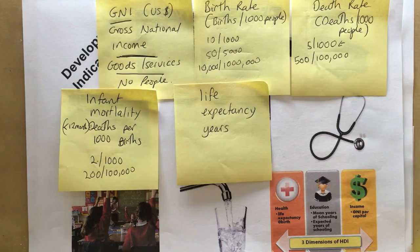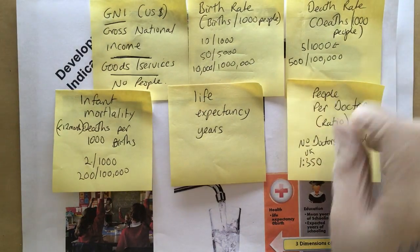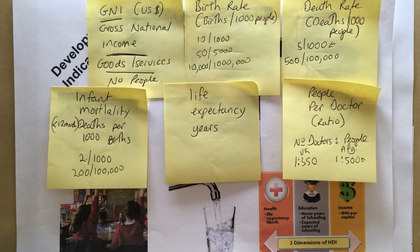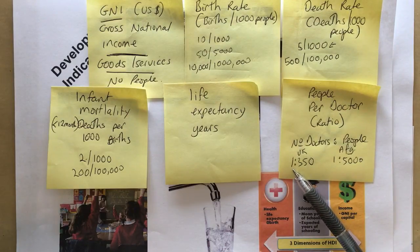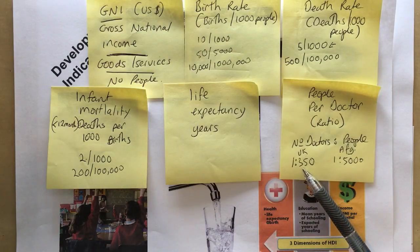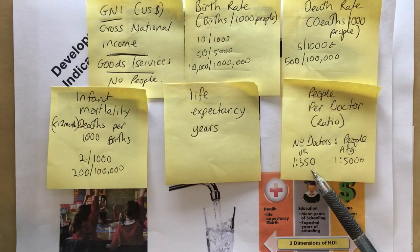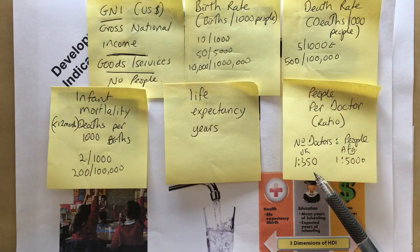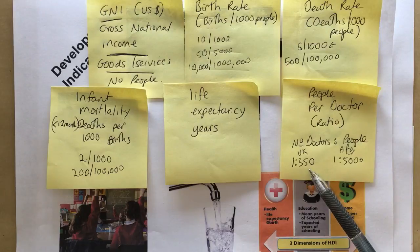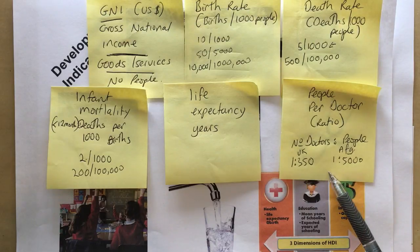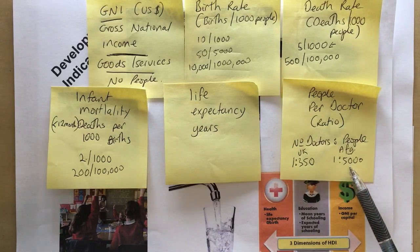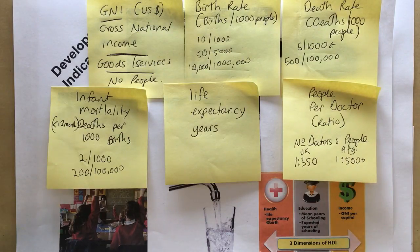Next we have people per doctor — a ratio between the number of doctors and the number of patients, on average, that each doctor treats. In the UK, each doctor on average treats about 350 patients. In Afghanistan, for example, one doctor treats about 5,000 patients. That's a massive difference, and you can see how that affects healthcare in a country.